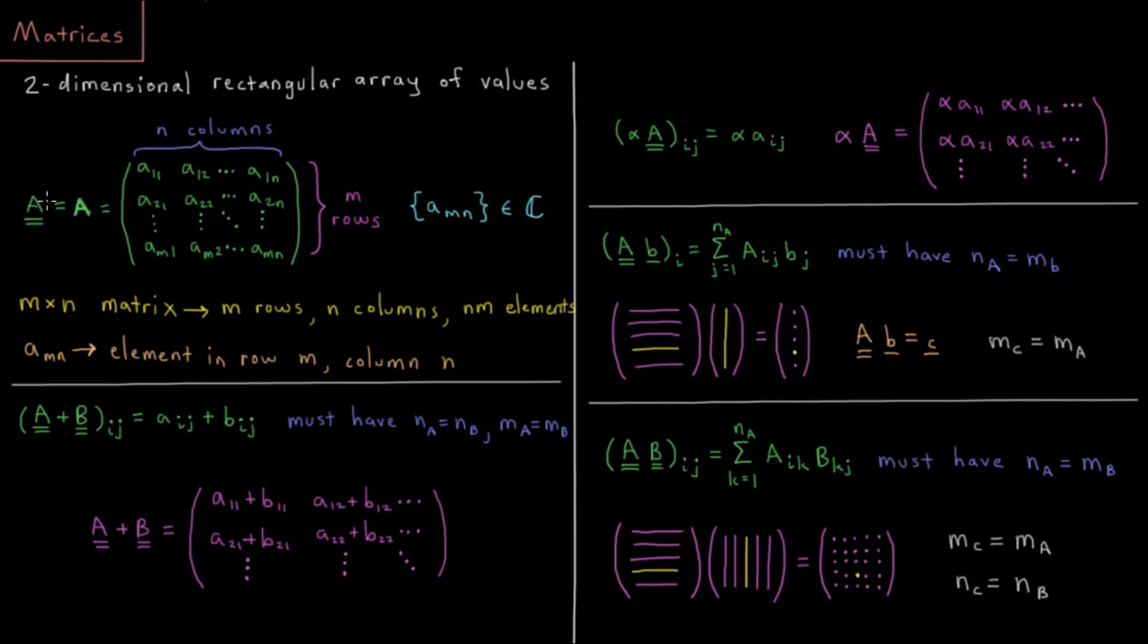We might represent this by some capital letter A, sometimes with two underlines beneath it. Two underlines indicating it would be a rank 2 tensor, so it has two dimensions worth of values. That could also be indicated by a bold face letter A.